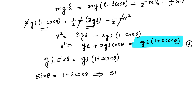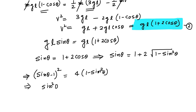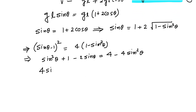To solve sin(θ) = 1 + 2cos(θ), substitute cos(θ) = √(1 − sin²(θ)) and square both sides: (sin(θ) − 1)² = 4(1 − sin²(θ)). Expanding: sin²(θ) + 1 − 2sin(θ) = 4 − 4sin²(θ). Rearranging: 5sin²(θ) − 2sin(θ) − 3 = 0.